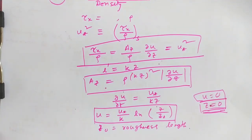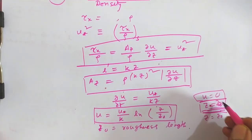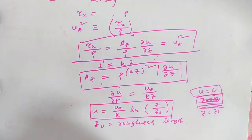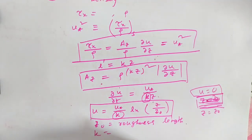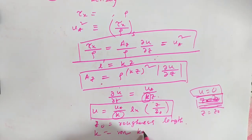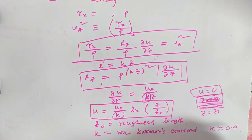The parameter z_0 is called the roughness length — it is a constant of integration chosen so that U equals zero at z equals z_0. The constant kappa in the logarithmic wind profile is called von Kármán's constant, which has a value of approximately 0.4.